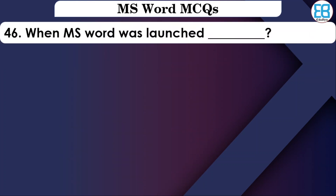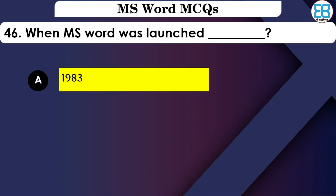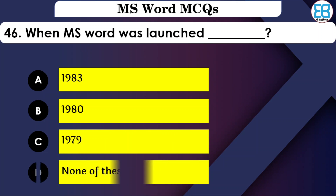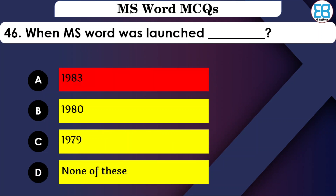When was MS Word first launched? The options are: 1983, 1980, or 1979. The correct option is 1983 — MS Word was first launched in 1983.